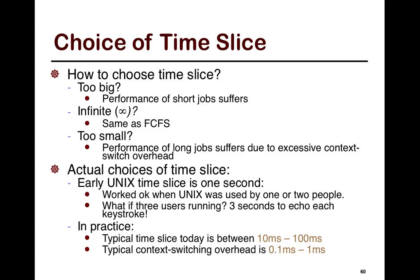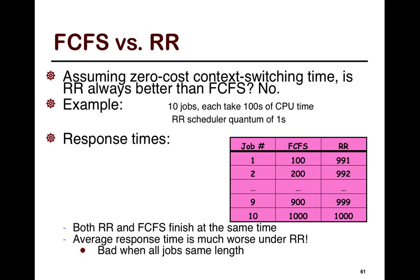In practice, though, typically, the time slice today is between 10 to 100 milliseconds. And typical context switch overhead is between 0.1 milliseconds to milliseconds, right? So, in some ways, the overhead is about 10 percent. Sorry, it's about 1 percent. So, if you have 0.1 milliseconds, then you have a 10 millisecond quantum.